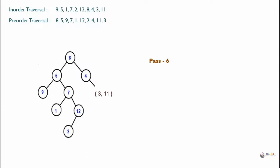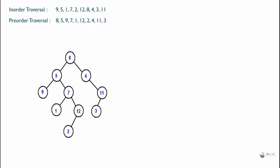Out of 3 and 11, the first element coming from the beginning of pre-order is 11. So the root will become 11. Look at 11 in in-order traversal — 3 is coming on the left of 11. So the left subtree is 3, and we can rewrite this with 11 as the root and 3 on the left side.